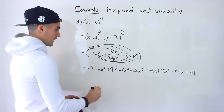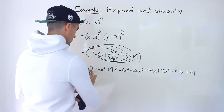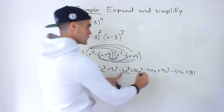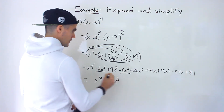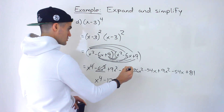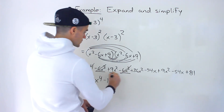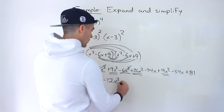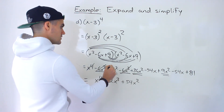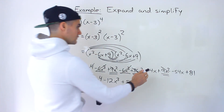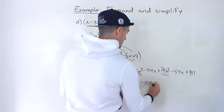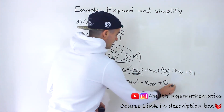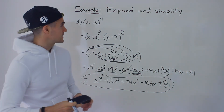Now simplify the like terms. x to the 4 is by itself. Minus 6x cubed minus 6x cubed gives minus 12x cubed. Then 9x squared plus 36x squared plus 9x squared gives 54x squared. Negative 54x minus 54x gives negative 108x. And then plus 81 — there's no other constant to combine with. So that ends up being the expanded and simplified expression for part d.